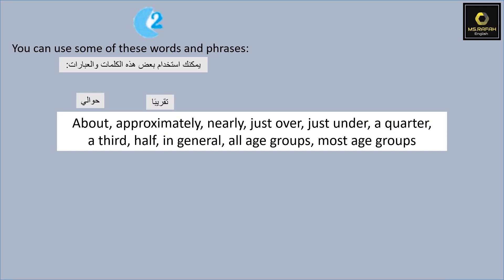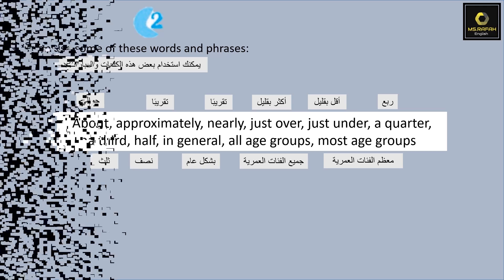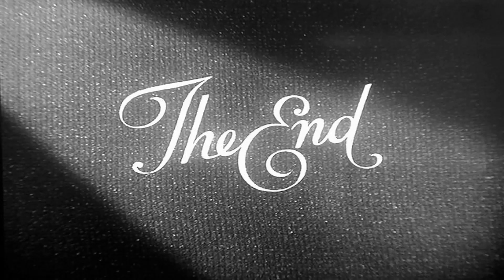You can use some of these words and phrases: approximately, nearly, just over, just under, a quarter, a third, half, in general, all age groups, most age groups. هدول كلمات منقدر نستخدمون بالموضوع، بتقدروا تستخدموا نفس النص اللي علينا من شوي وحطينا له العناوين. That's everything for today. Thank you very much. See you next lesson.